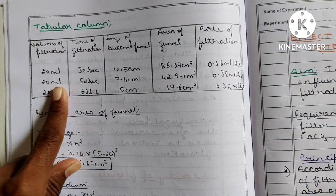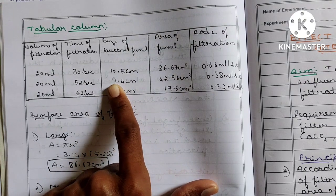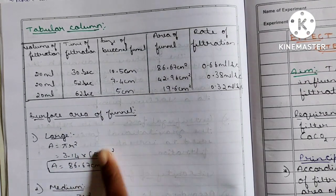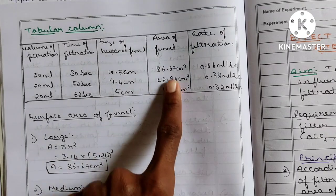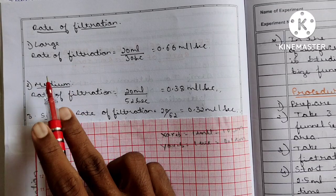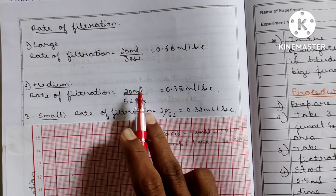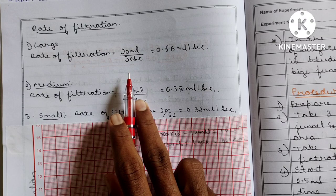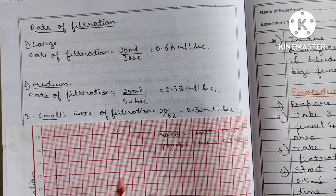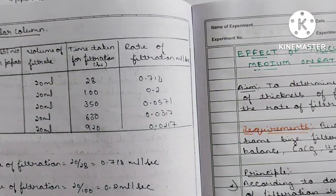For the tabular column: volume of filtrate = 20 ml. For example, if you filtered with a large Buchner funnel (area ~30.5 cm²) it takes 30 seconds, medium takes 52 seconds, small takes 62 seconds. Rate of filtration = volume ÷ time: large = 20/30, medium = 20/52, small = 20/62. Then plot a graph.